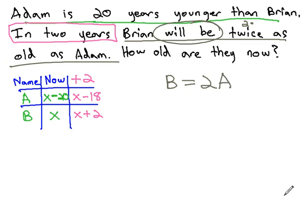Notice I made this equation about the future without worrying about the time span or what's happening right now. I simply said Brian will be twice Adam to make my equation.